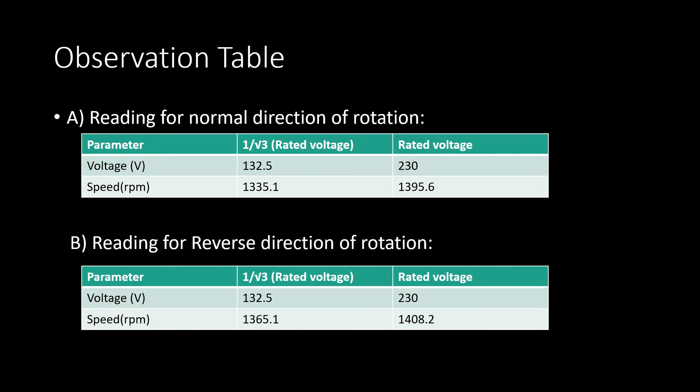Similarly, just by reversing the direction of rotation—it means interchanging any two poles or two phases—we are able to run the motor in reverse direction. Repeat the same process in reverse direction and take down the readings of voltage and speed with reduced voltage as well as with rated voltage.